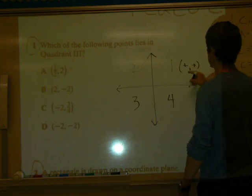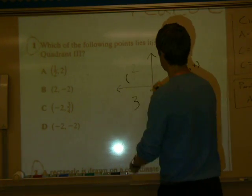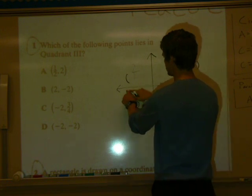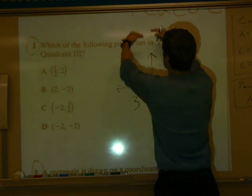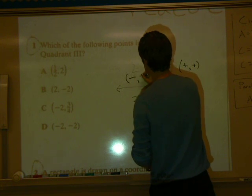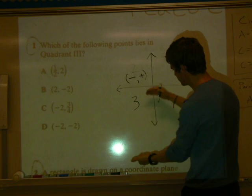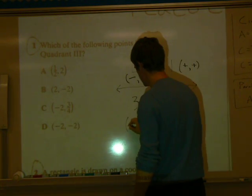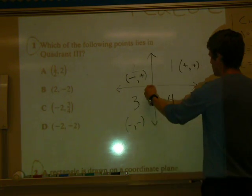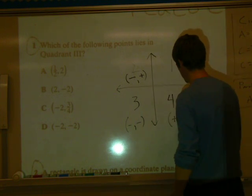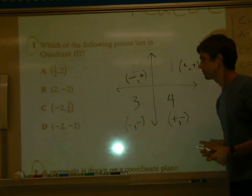So it's always going to be a positive comma positive. Here, your x's are negative, right, because you're going to go into the left. Your y's are positive because you're going up. So negative, positive. 3, negative x going to the left, negative y going down, negative, negative. 4, positive x, negative y. So positive x, negative y.